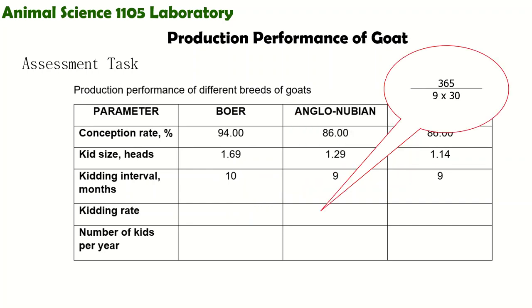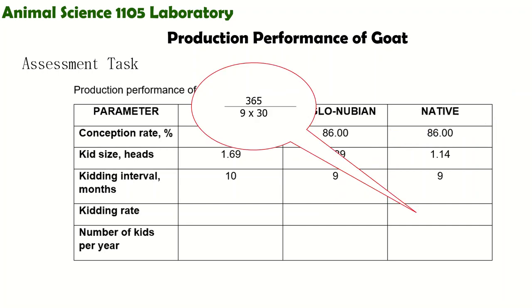For the Anglo-Nubian, the formula is the same: 365 divided by 9 (the Anglo-Nubian's kidding interval) times 30. Same also for the Native Goat: 365 divided by 9 times 30.